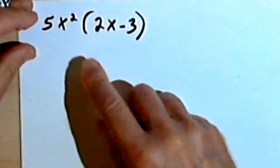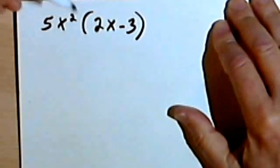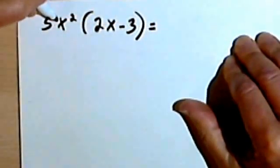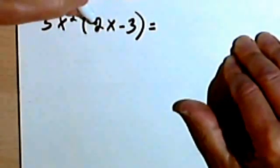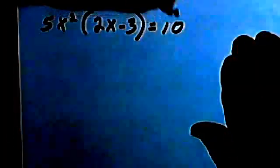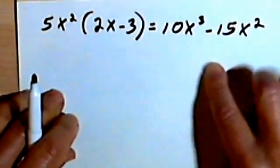Here we've got a multiplication problem. I'm multiplying this monomial, 5x squared, times the binomial, 2x minus 3. So basically I'm just distributing this 5x squared across the binomial. So I've got 5 times 2 is 10, x squared times x is x to the third, and then 5 times negative 3 is negative 15. And since there's no x over here, I just have the x squared, and I get this result.